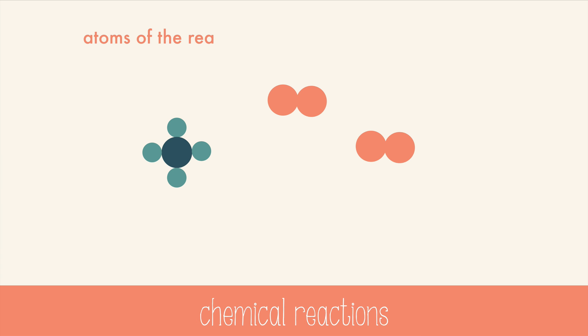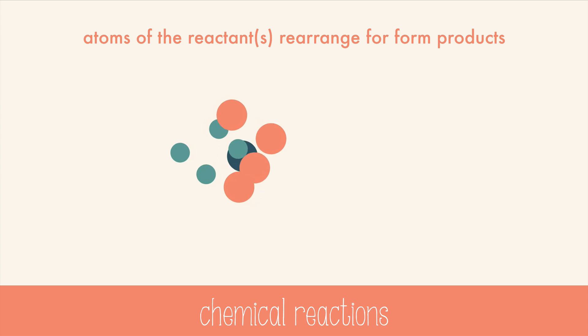During a chemical reaction, atoms of the reactant rearrange to form products. These reactants will break apart and recombine in a new way which makes the products.